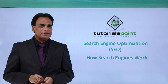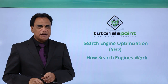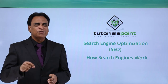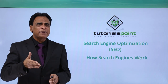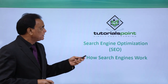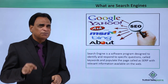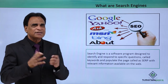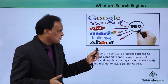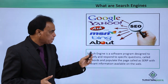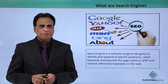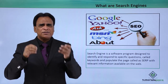Hello and welcome to Tutorials Point. Today in search engine optimization we'll discuss how search engines work, what actually goes behind them, and what are the different types of search engines. Before understanding how search engines work, we need to look into what search engines basically are. A search engine is a software program designed to identify and respond to specific questions called keywords and populate the pages, called SERPs, with relevant information available on the web.